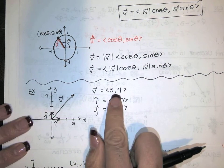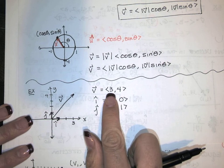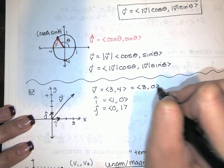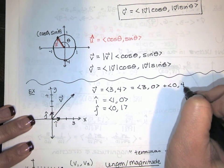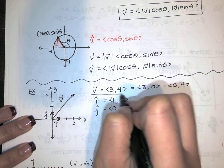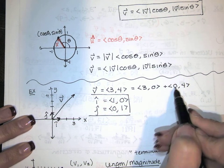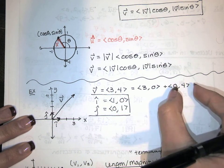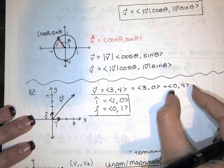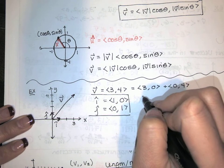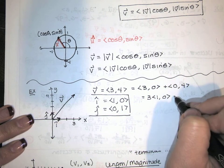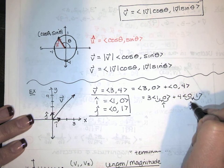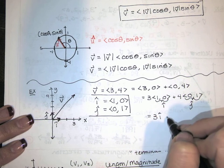Now watch this. I've written v as (3, 4) in component form, but I could also write it as the sum (3, 0) plus (0, 4). Isn't that the same thing? Remember how we add vectors — we add component by component. Is 3 + 0 = 3? Yes. Is 0 + 4 = 4? Yes. So I've split v into two pieces: the piece in the x-direction and the piece in the y-direction. I can even go further — factor out the 3 and factor out the 4, and that's just the definition of i-hat and j-hat. So I could write my vector as 3i-hat plus 4j-hat.